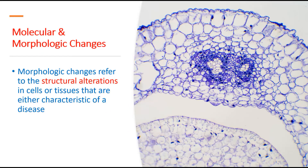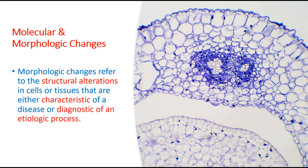Number three: molecular and morphological changes. Morphological changes refer to the structural alterations in cells or tissues that are either characteristic of the disease or diagnostic of its etiologic process. For example, if I examine a tissue and find TB bacilli, the disease is tuberculosis. If you see bilharzia ova, you know it is a bilharzia lesion.